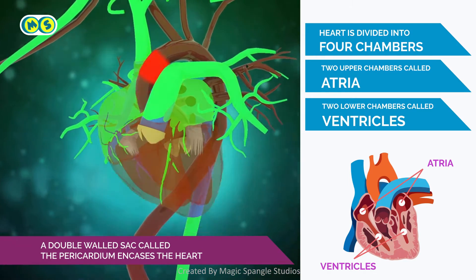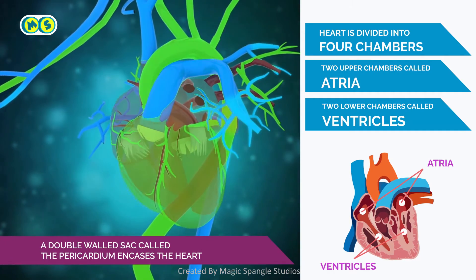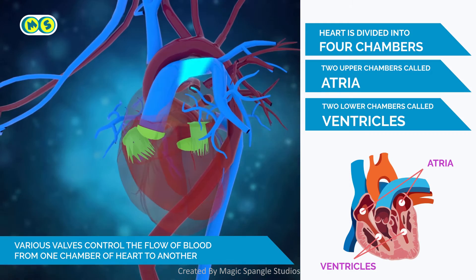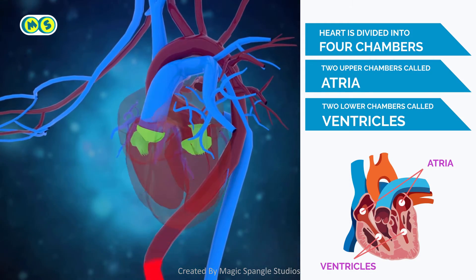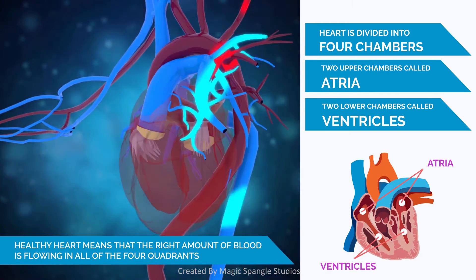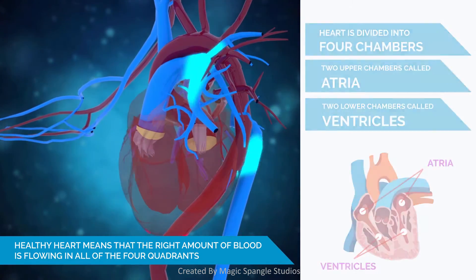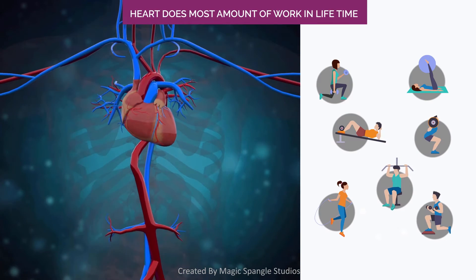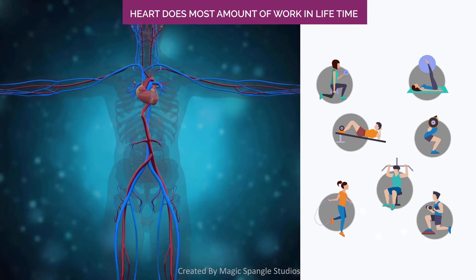A double-wall sac called the pericardium encases the heart. The atria receive blood returning from your body through the veins, and the ventricles pump blood to your body through arteries. Various valves control the flow of blood from one chamber of the heart to another. A healthy heart means that the right amount of blood is flowing in all four quadrants.